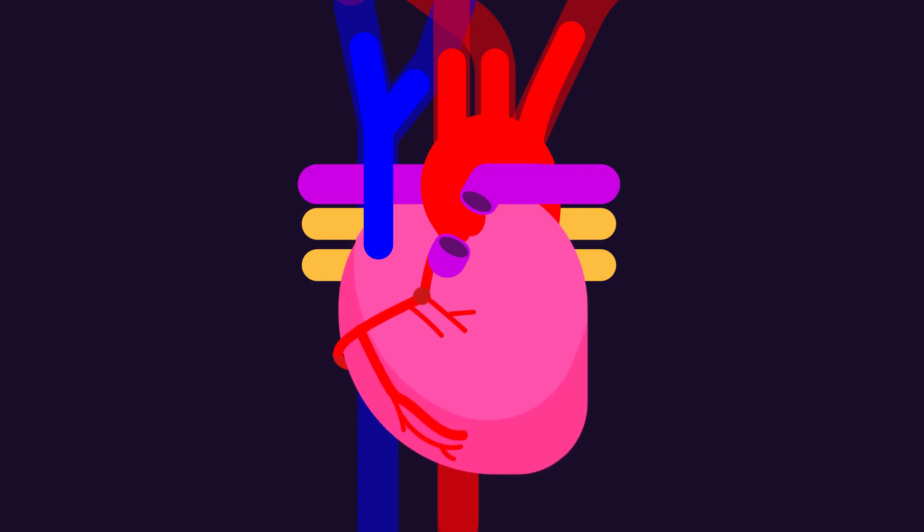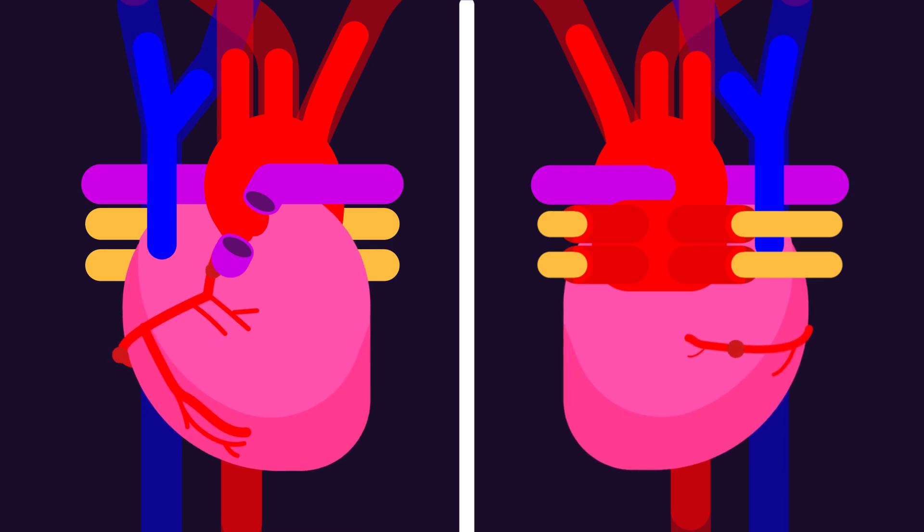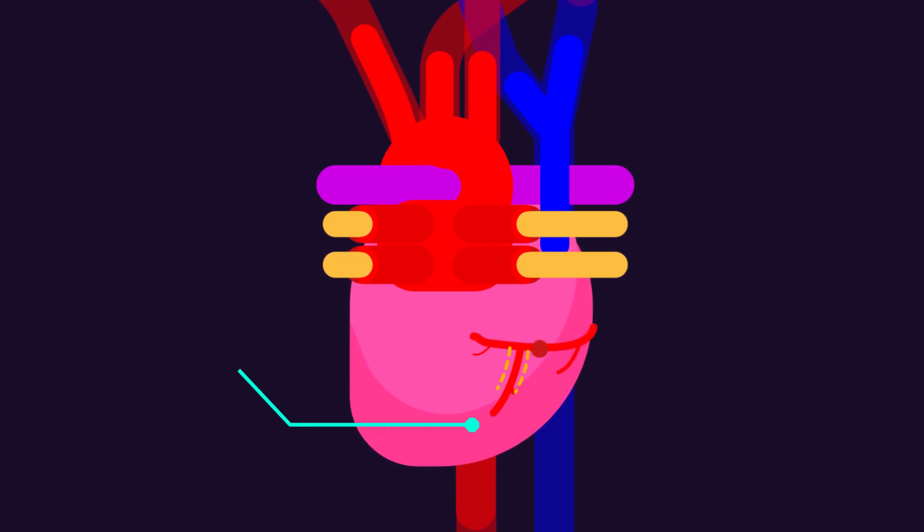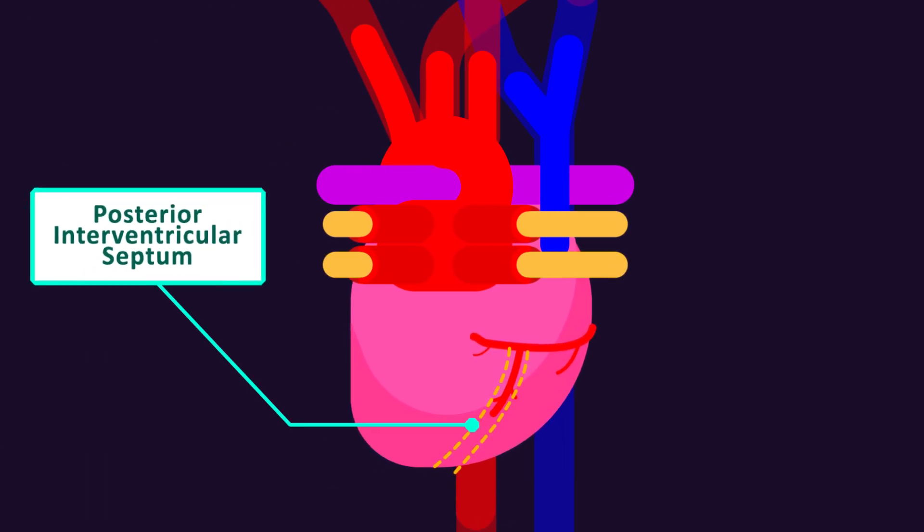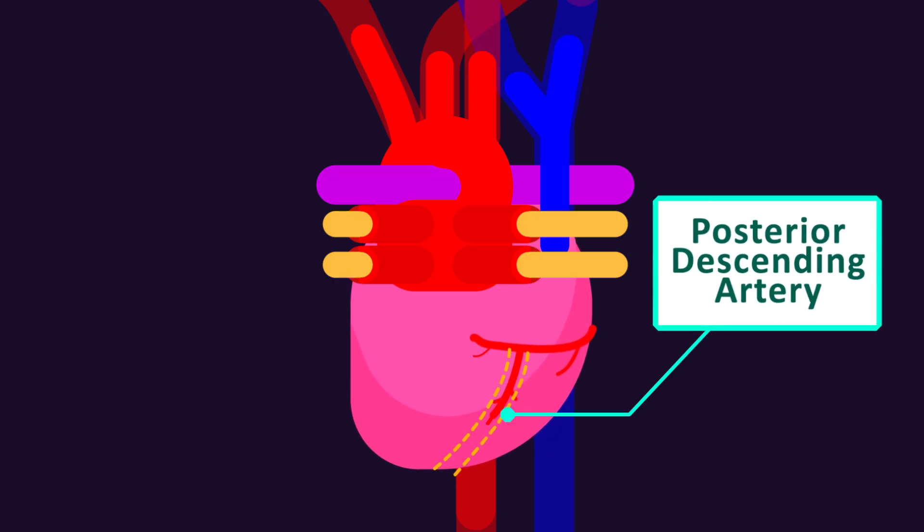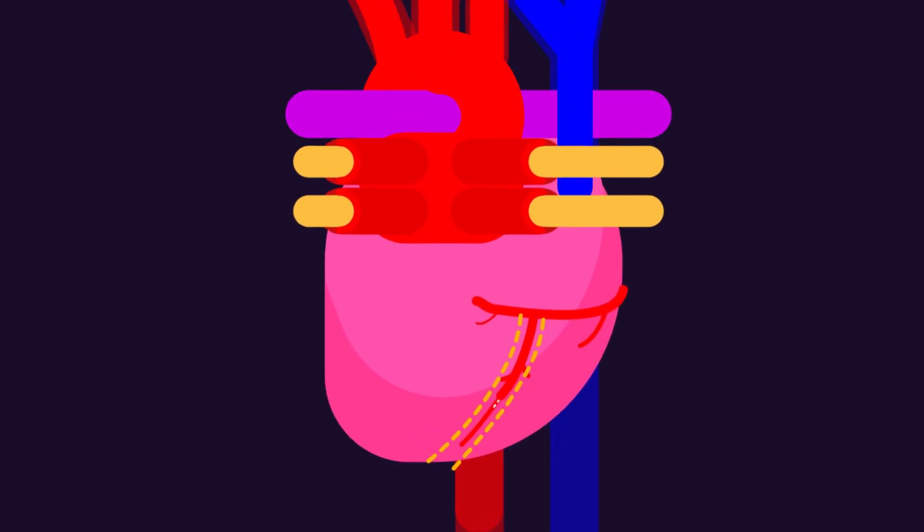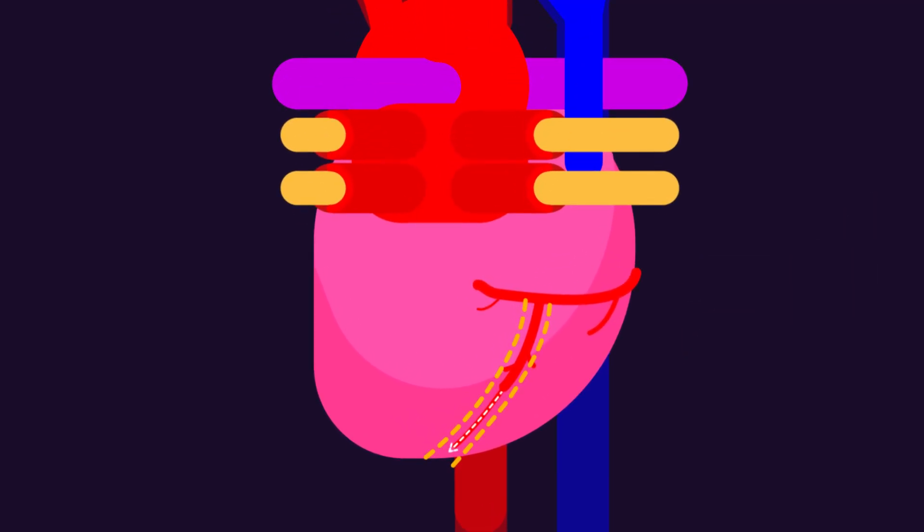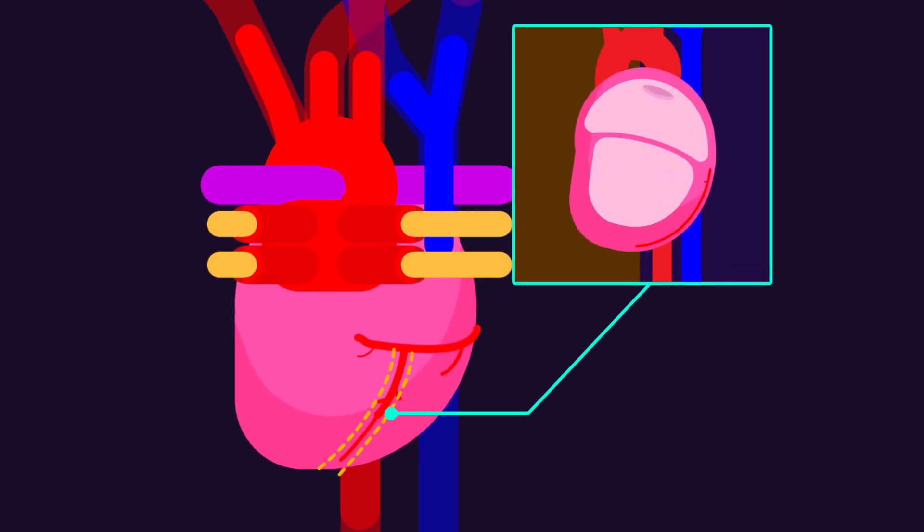It supplies blood to the superficial portions of the right ventricle inferior margin or surface. RCA gives rise to the posterior interventricular artery on the posterior surface of the heart and it travels in the posterior interventricular septum. It is also known as the posterior descending artery as it runs along the posterior surface of the heart towards its apex.